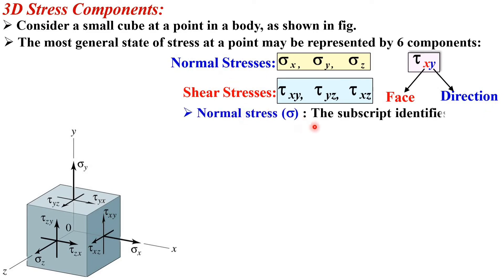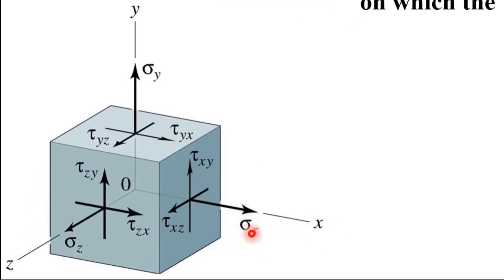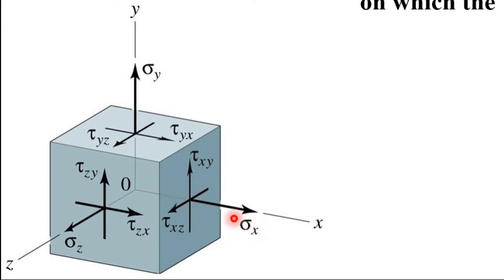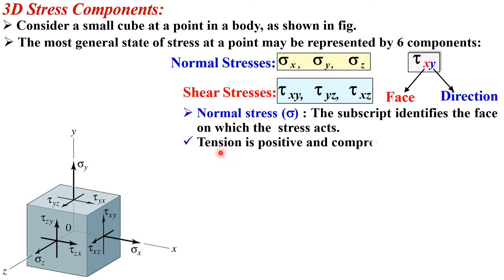For normal stress, the subscript identifies the face on which the stress acts. Here sigma x is the normal stress — sometimes written as sigma xx. Subscript x identifies the face, meaning it is on the x plane, and sigma x acts normal to that x plane — that is why it is called normal stress. Keep in mind tension is always taken as positive and compression is taken as negative.